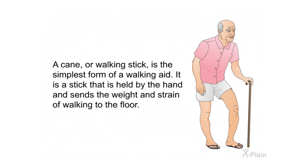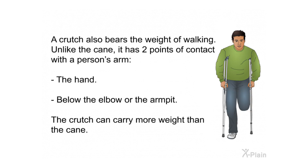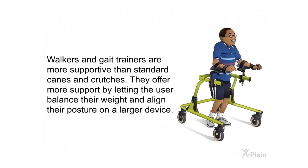A crutch also bears the weight of walking. Unlike the cane, it has two points of contact with a person's arm — the hand below the elbow or the armpit. The crutch can carry more weight than the cane. Walkers and gait trainers are more supportive than standard canes and crutches. They offer more support by letting the user balance their weight and align their posture on a larger device.